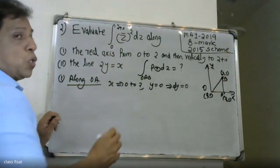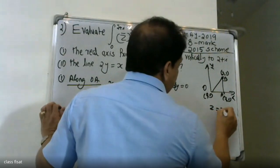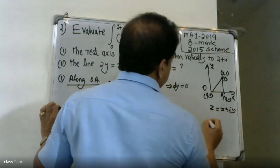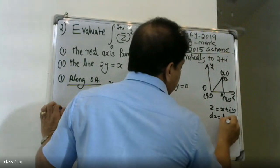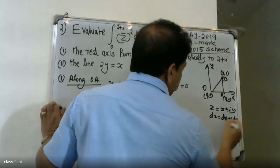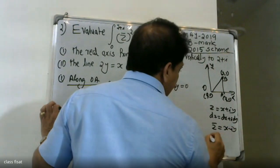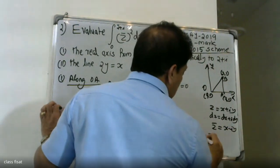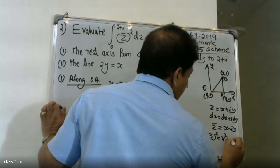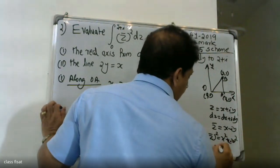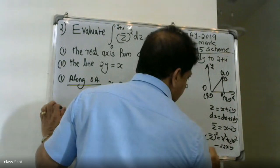We cannot see the path of z̄ directly, but we write z̄ as x minus iy, and dz equals dx plus i dy. So z̄ dz is (x minus iy)(dx plus i dy).